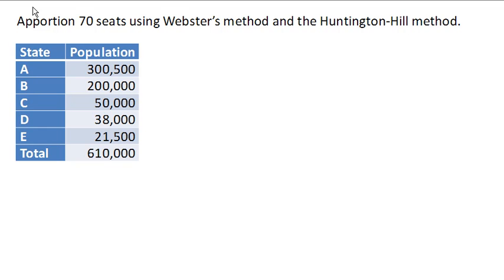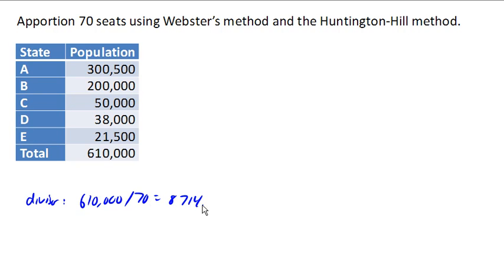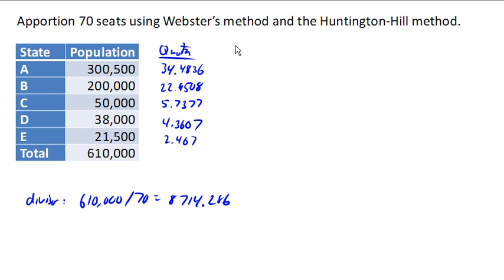We want to apportion 70 seats to these five states using Webster's method and the Huntington-Hill method. We'll start out in our usual way by finding the divisor — taking the total population divided by the number of seats to come up with the divisor. From that we can calculate our quotas and make our initial allocation.